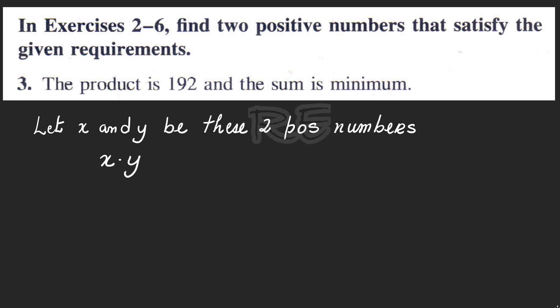We are going to call those two numbers x and y, and x times y is equal to 192, and the sum S, which is x plus y, must be minimum.